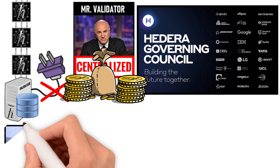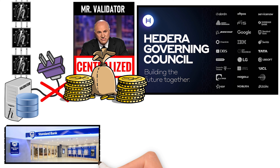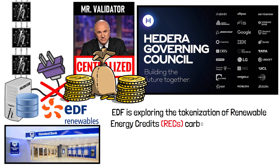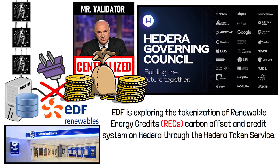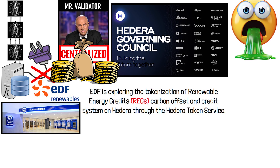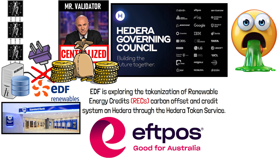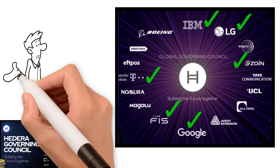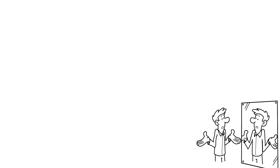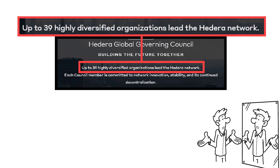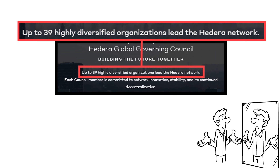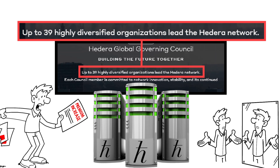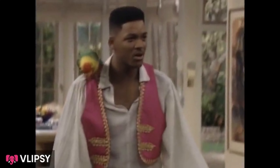Here is a list of people running validators. Standard Bank, a banking and financial service across sub-Sahara Africa. Number two, EDF, a top five global utility company. EDF is exploring the tokenization of renewable energy credits, RECs, carbon offsets and credit systems on Hedera through the Hedera token service. Number three, ETF POS, Australia's national debt operator. And if that wasn't enough, how about IBM, Google, Verizon, T-Mobile, Shizhan Bank, IFS? Do you see any retail investors on that list? They have like 39 different parties running validators. Could you imagine if there were only 39 miners out there mining Bitcoin trying to convince people that that's decentralized? So what that means is that every time you use the HBAR network and you pay fees to process your transaction, a percentage of those fees go to the validators that process your transaction, meaning the rich get richer.